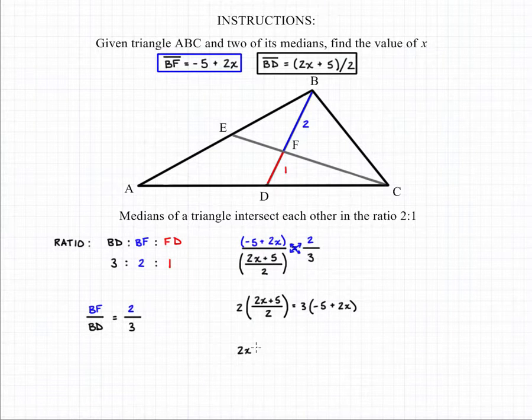The 2s cancel, which leaves us with 2x + 5 on the left, and if we distribute the 3, we end up with -15 + 6x on the right.